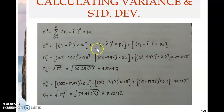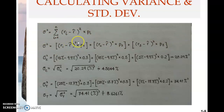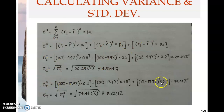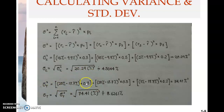Therefore we can compute using the same formula. This formula without expansion, and this formula with expansion given three conditions or three scenarios or three states of the economy. That applies also for stock T because there are also three states of the economy for stock T. So this is the variance of return for stock T, and there are three components here.